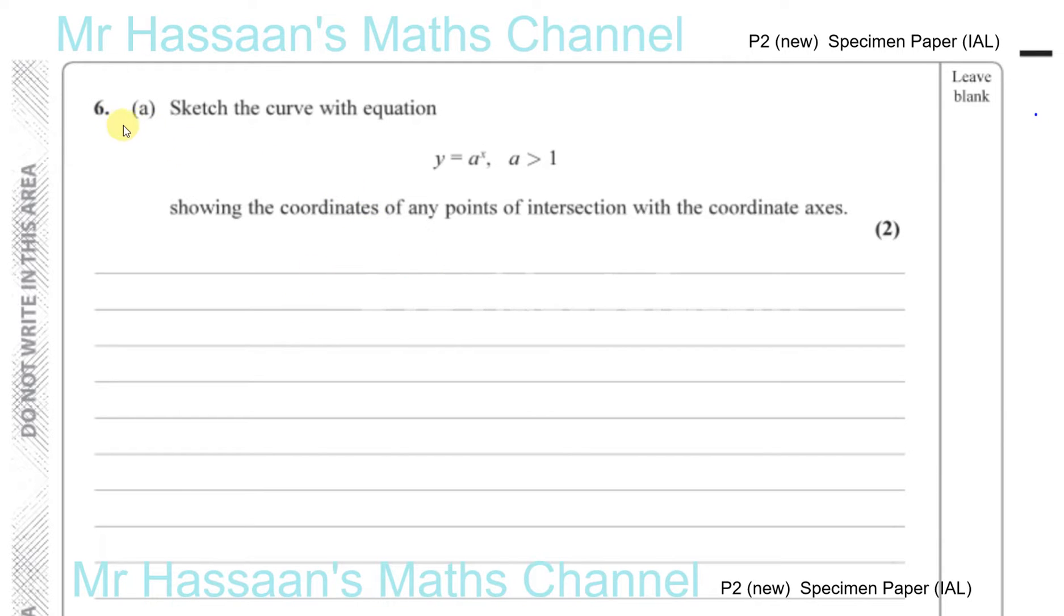Now 6 part A says sketch the curve with equation y equals a to the power of x where a is greater than 1. So examples of this would be y equals 2 to the power of x, y equals 3 to the power of x, for example y equals 10 to the power of x. All of these have a particular shape.